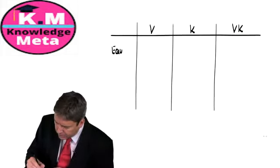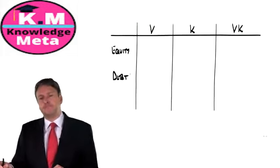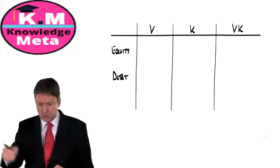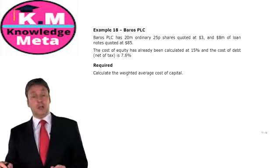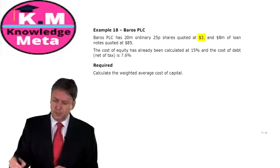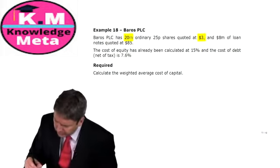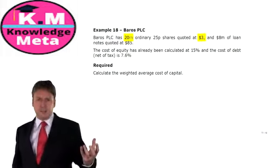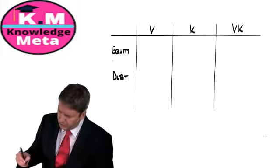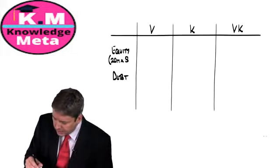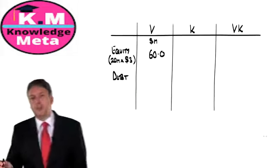For equity: the market value is $3 per share × 20 million shares = $60 million. Simply identify the number of shares, multiply by the current market value, and you have your equity value.